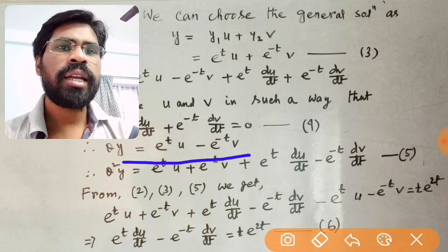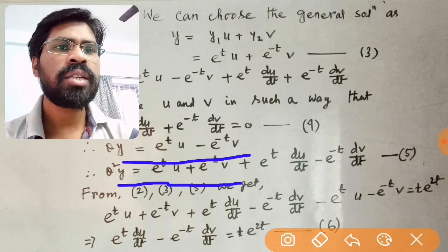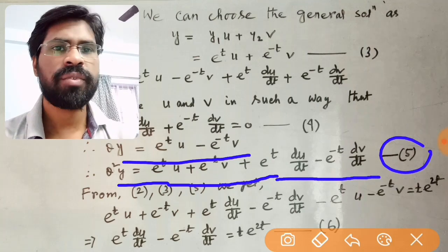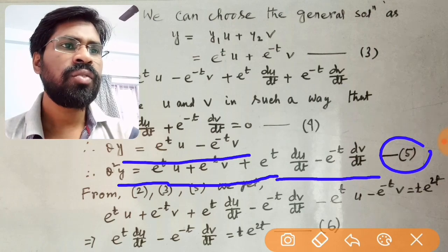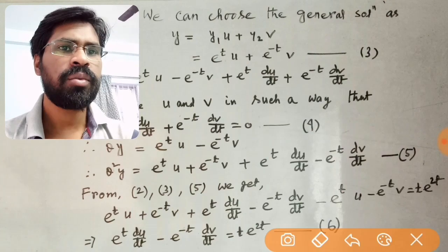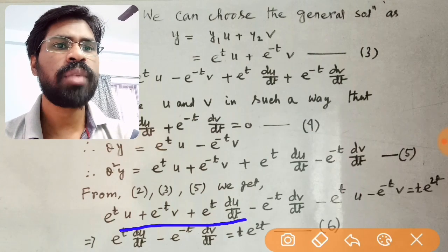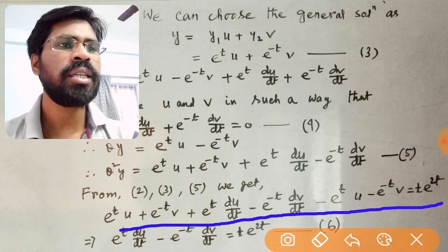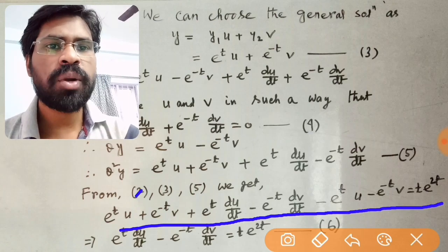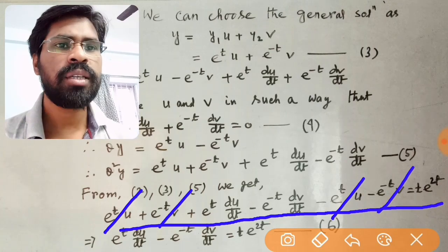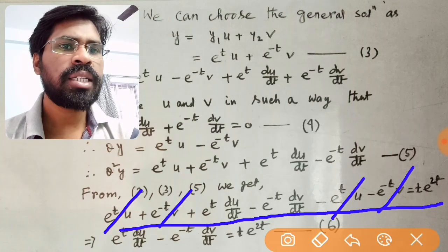If we differentiate again, we get θ²y = e^t·u + e^{-t}·v + e^t·du/dt − e^{-t}·dv/dt. Substituting into the reduced equation and using the condition from the variation of parameters method, we obtain a system of equations relating du/dt and dv/dt, which we label as equation 6.